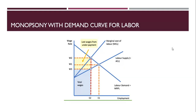Now, if you impose the MRP curve onto these two curves — the AFC and MFC — where the MRP curve intersects the MFC curve, that is the quantity the monopsony is going to hire, shown as E2. The wage the monopsony pays is where the dotted line rising from E2 intersects the average factor cost curve. This is the great inefficiency of monopsony: it hires based on the MFC curve but pays wages based on the AFC curve, so it hires fewer workers and pays lower wages, leaving workers worse off.